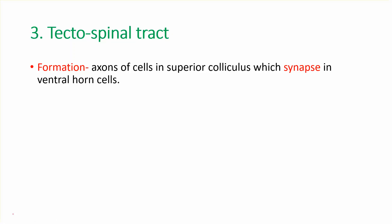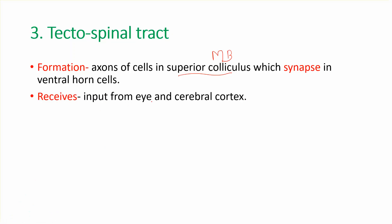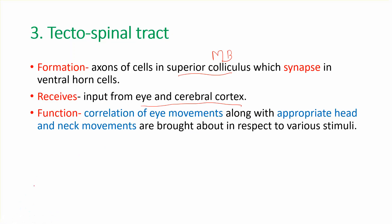The tectospinal tract is formed by axons of cells of the superior colliculus, which synapse on the ventral horn cells. The superior colliculus is at the midbrain. It receives input from the eye and the cerebral cortex. Its function is related to the correlation of eye movements along with appropriate head and neck movements in response to various stimuli.